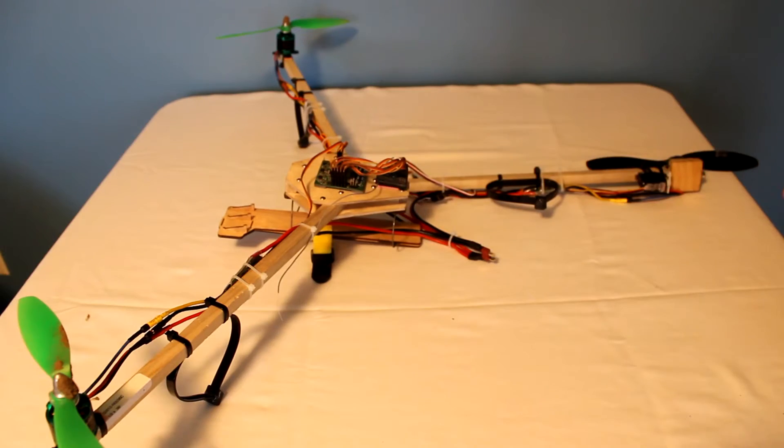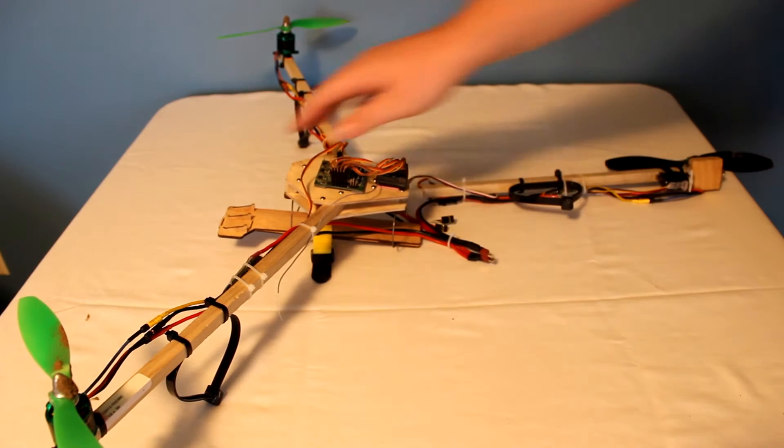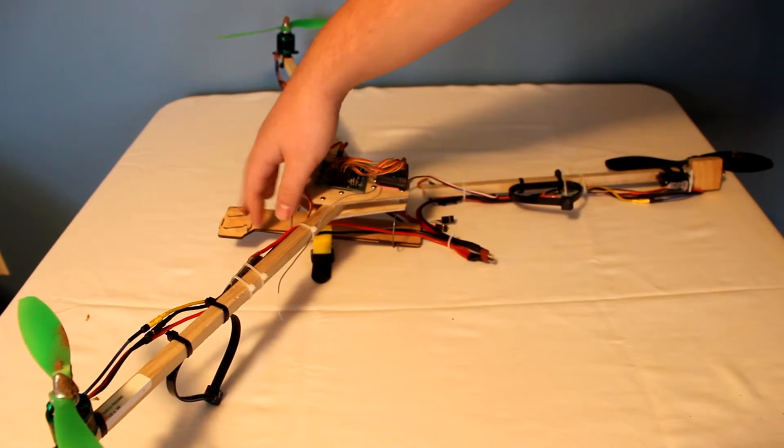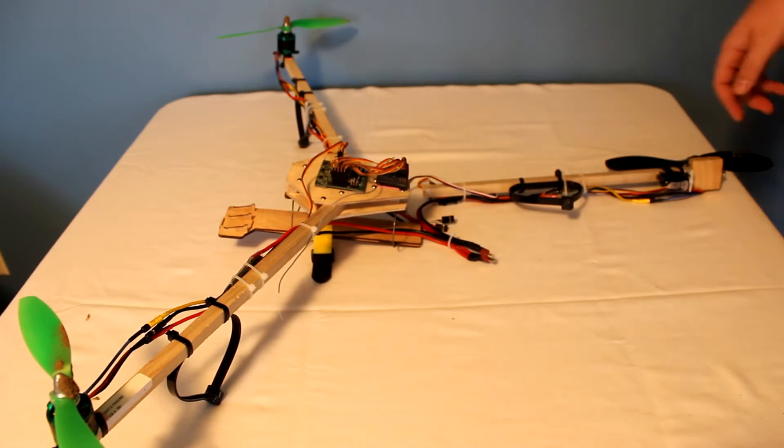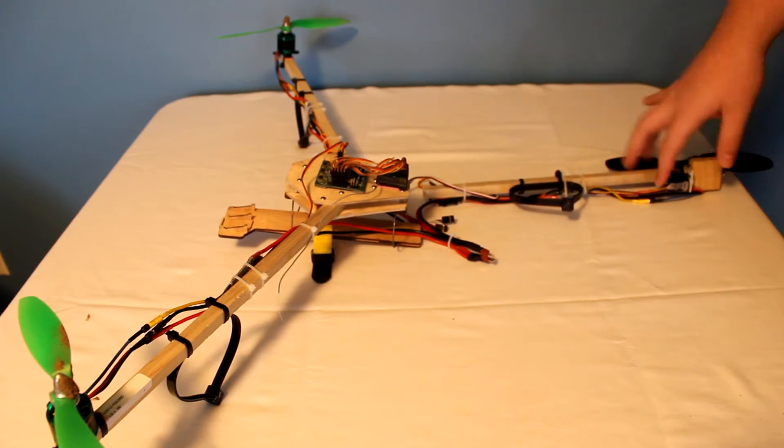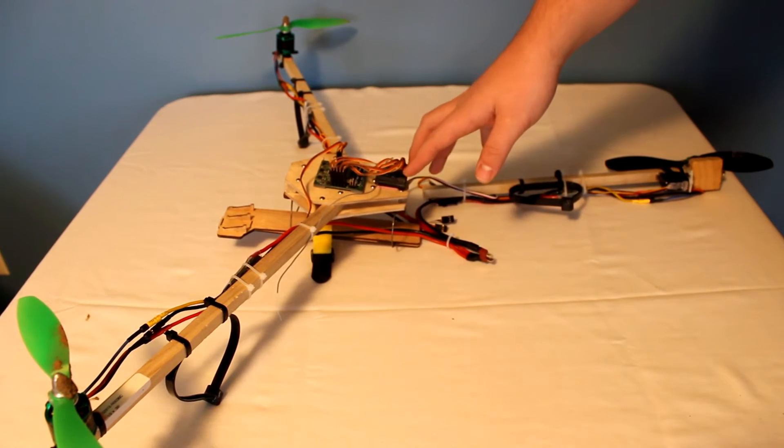So here's the aftermath of the crash you just saw. The rear arm broke off, and the little wooden plate for the GoPro came off too. That's nothing bad, that's really easy to fix, but I'm just wondering what caused it.